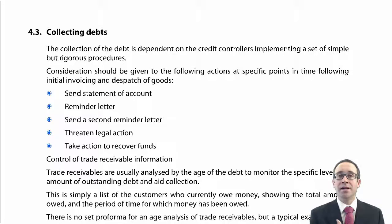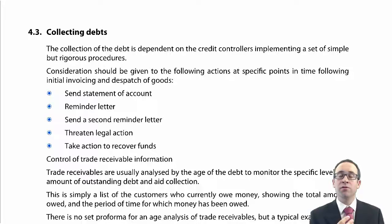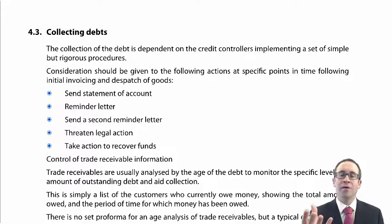If the customer is on longer terms, we could send them a reminder letter. If we receive no cash, we can send a second reminder letter before threatening legal action. Once we've threatened legal action, we can look at all possible options to recover the debts. Many businesses — and this is something you may have seen in your fundamentals of accountancy course — maintain a receivables figure on the statement of financial position, which comes from the receivables control account and receivables ledger. We look at the individual balances on individual customer accounts.